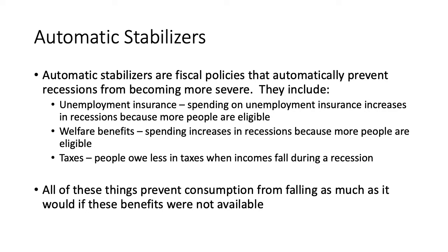Some types of fiscal policies kick in automatically during a recession. For this reason, these policies are called automatic stabilizers. Automatic stabilizers are policies like spending on unemployment insurance and welfare benefits like food stamps. As more people are put out of work during a recession, spending on unemployment insurance and welfare benefits automatically increases as people become eligible for these programs. This increased spending helps provide some amount of income for these people and prevents GDP from declining further by giving people who are affected by a recession the income they need to pay for their basic needs.